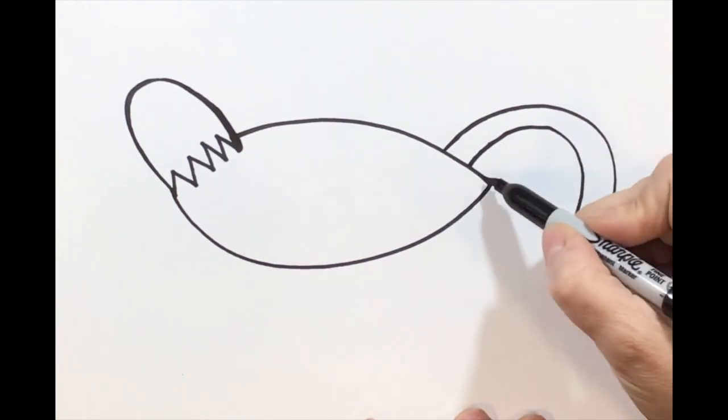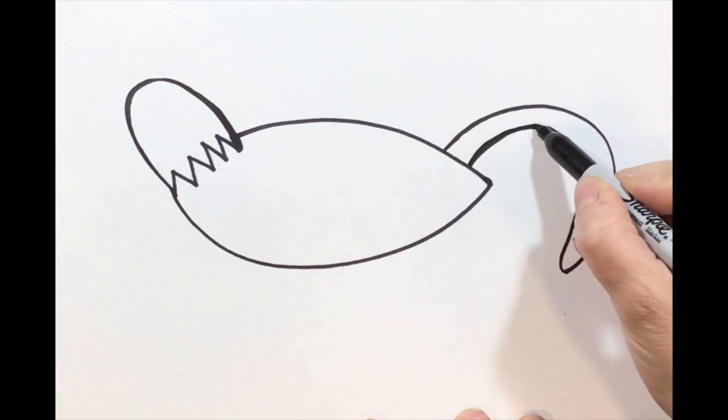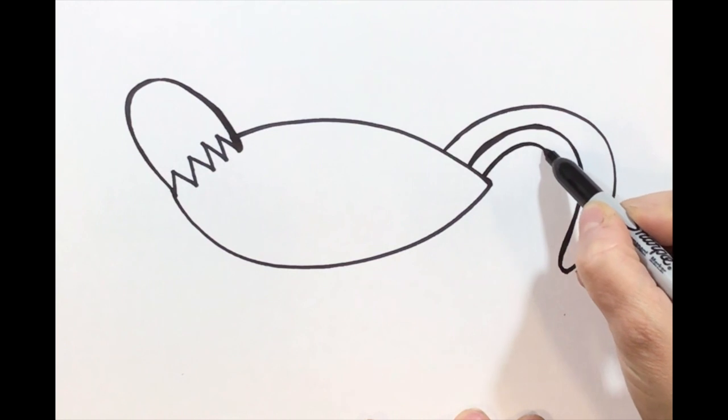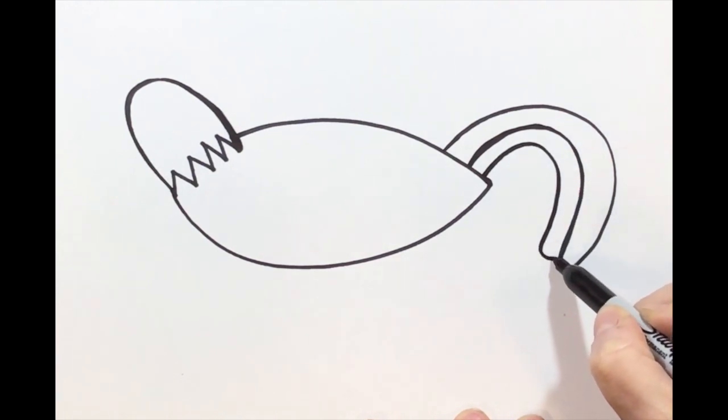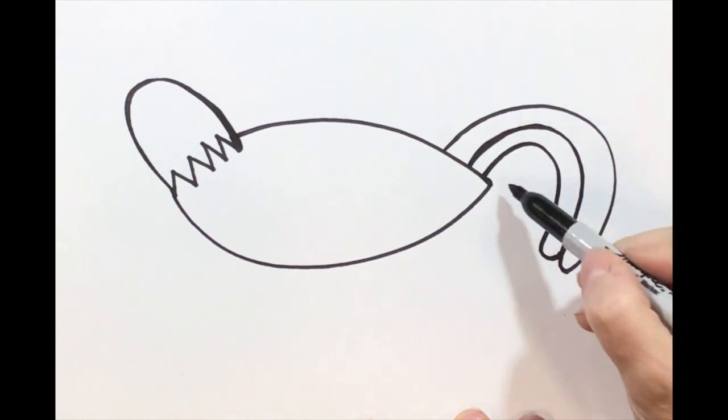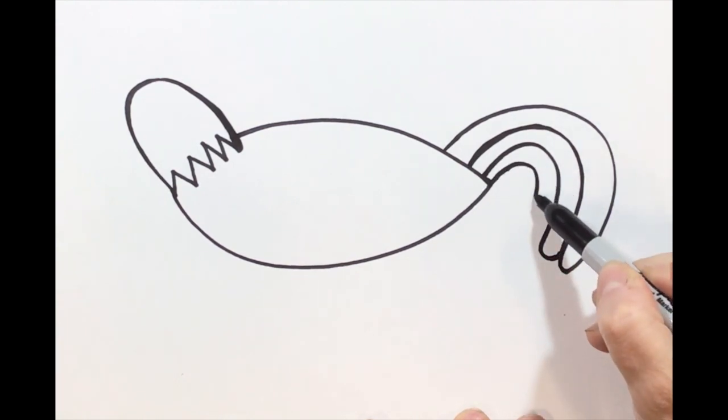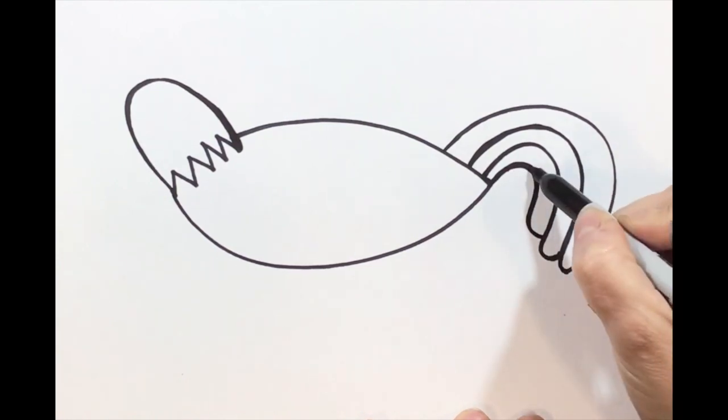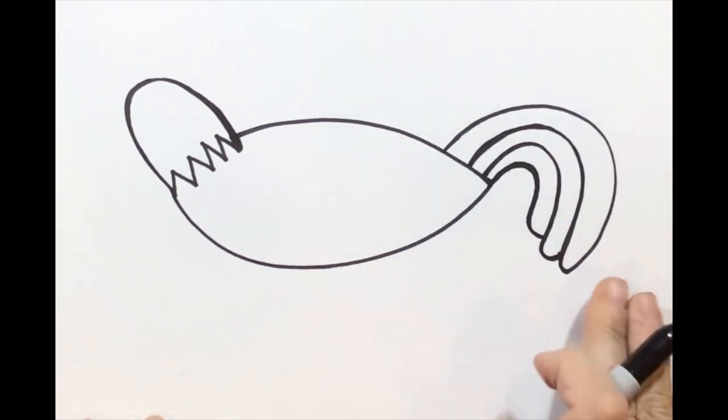Step number five, we're going to just make another curved line. Just making that one a little bit thicker first. Right here, we're going to make another curved line that goes around and comes in, and it's almost looking like we're creating parts of a rainbow. And we have one more little section. So step five has two sections to the feathers and the back of our rooster.